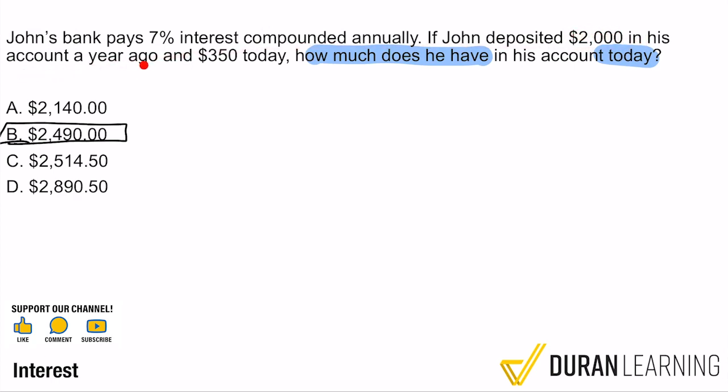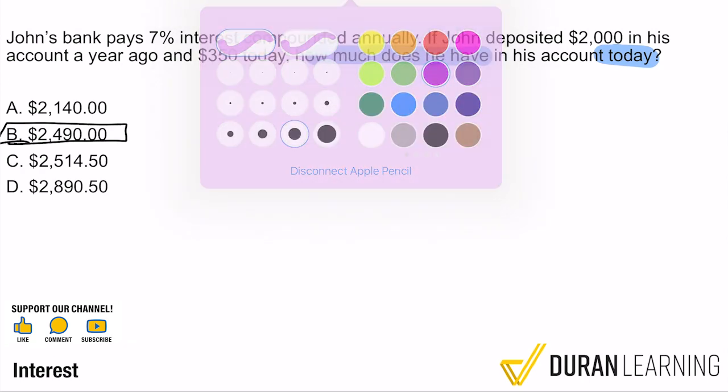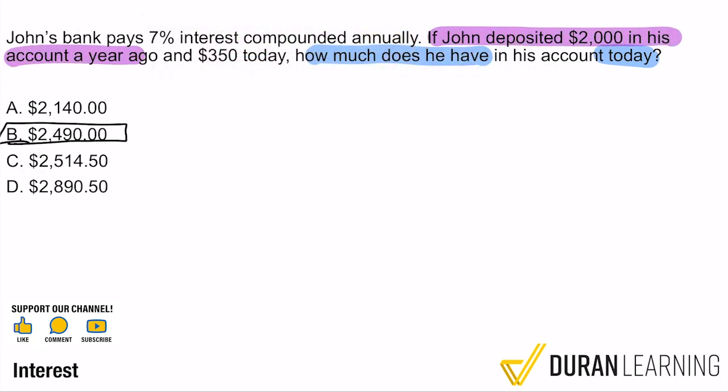So what happened before? Reading through it, he deposited $2,000 in his account a year ago and $350 today. But there's something special about that $2,000 he deposited, because the bank pays 7% interest every year — 7% interest compounded annually. What that means is that after a year, he gets 7% of that $2,000 put back into his account. That's what interest is.